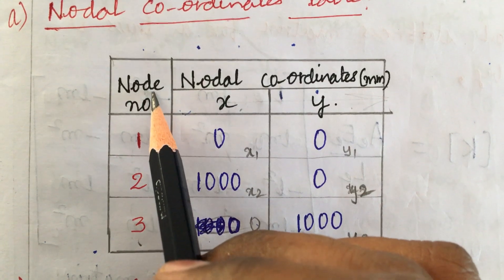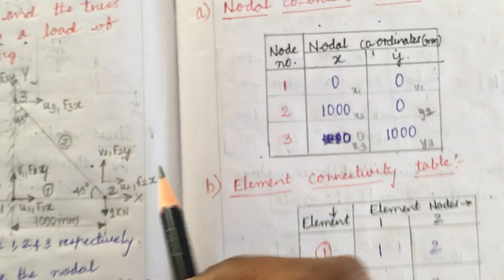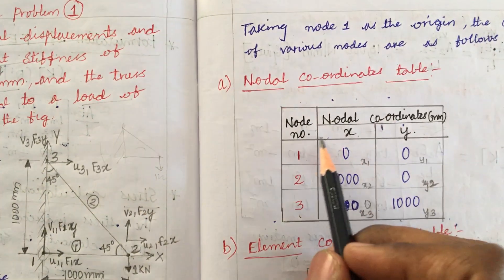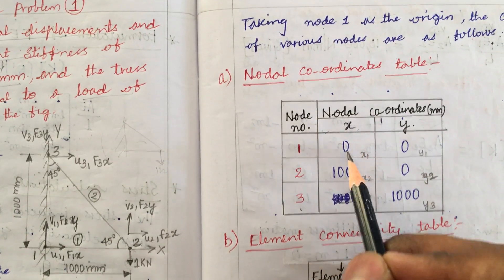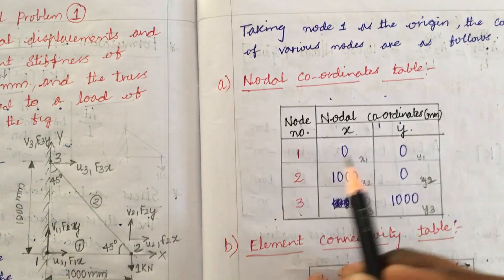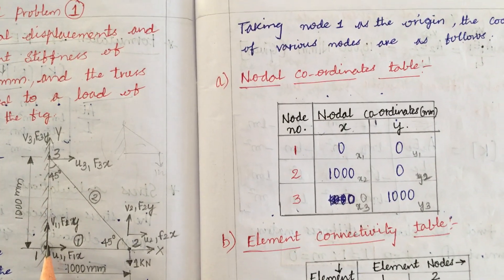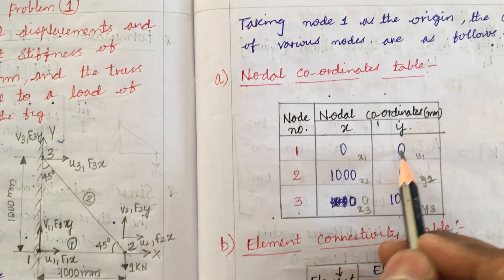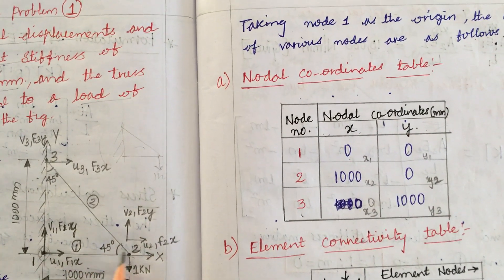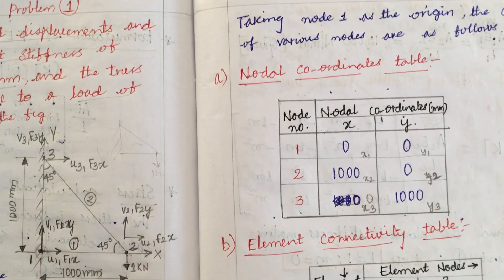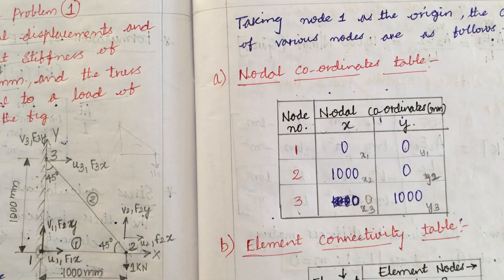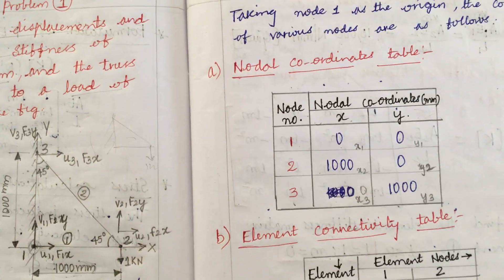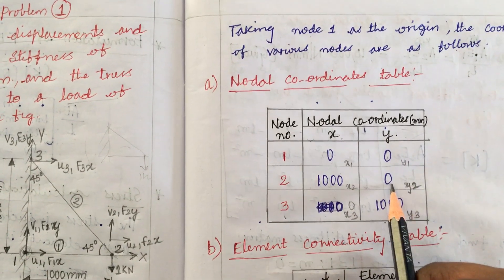We have 3 nodes. The nodal coordinates at node 1: x = 0, y = 0 since it is the fixed origin. At node 2, the distance along x from the origin is 1000 mm and there is no y component, so y = 0.